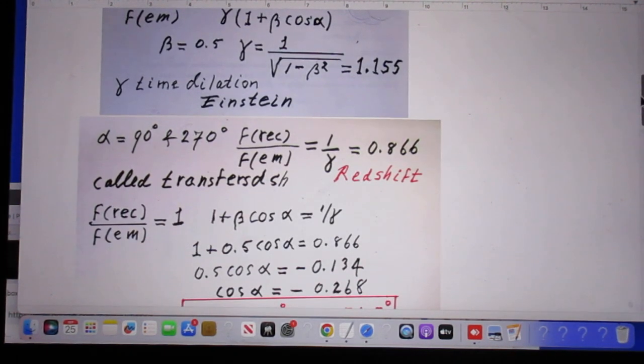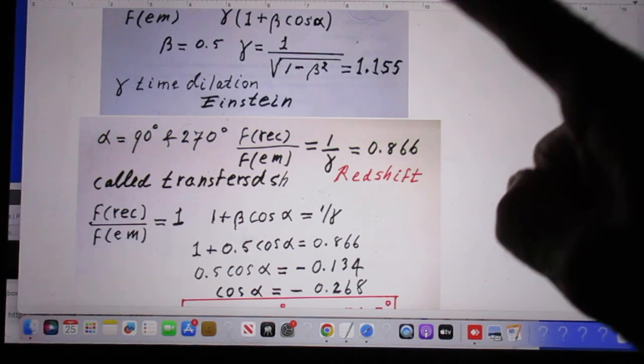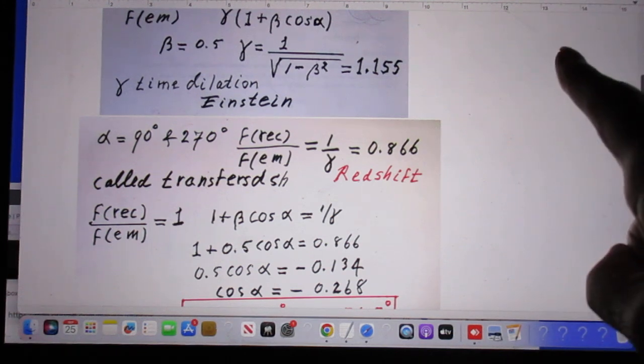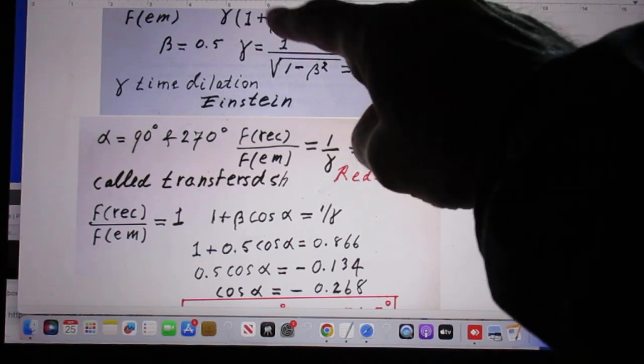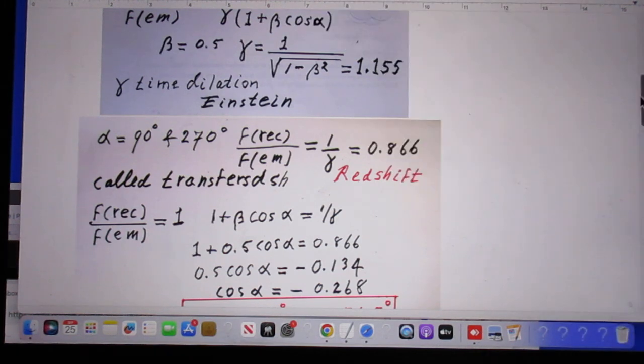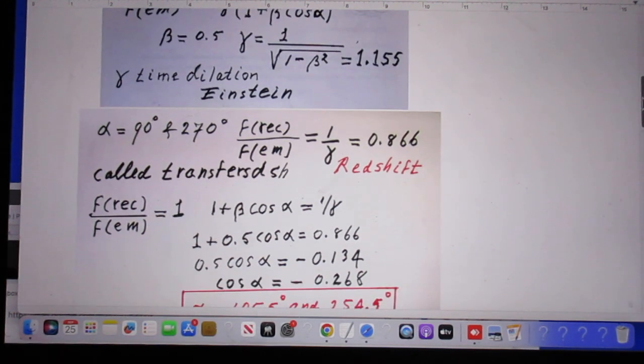When alpha is 90 degrees or 270 degrees, the frequency received by us divided by the frequency emitted is 1 over gamma, because beta cosine alpha will be zero. That means that 1 over gamma, which is 0.866, is smaller than 1, and therefore the frequency we receive is always lower than the frequency emitted. Therefore, we have always redshift.